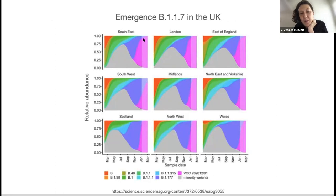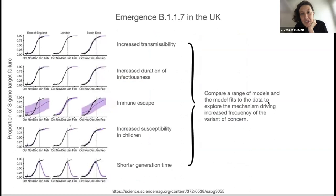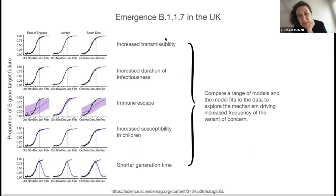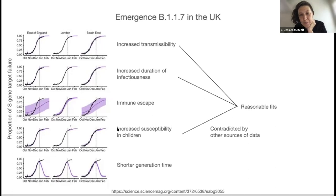It's incredibly important to figure out what's going on with a new variant. The authors of this paper fitted different models to the proportion of S gene target failure — essentially this variant barcoded itself, which is very handy. They fit models including it being more transmissible, having an increased duration of infectiousness, having more immune escape, increased susceptibility in children, or shorter generation time. Some models fit well, others were terrible. This matters because if we understand mechanism, we can better control spread. It's always good to think deeply about what's going on under the hood.